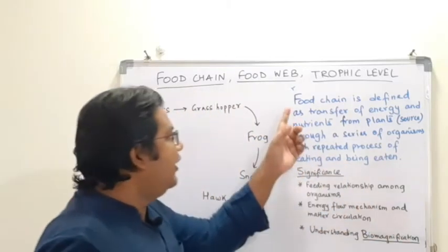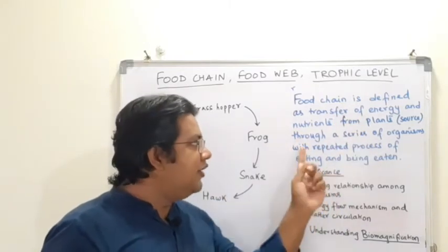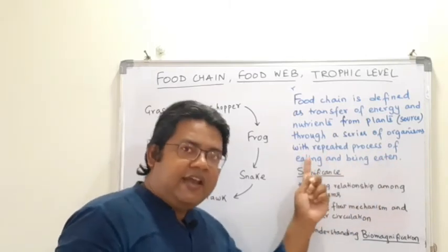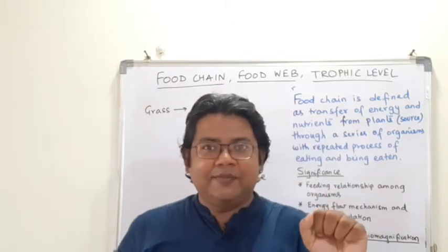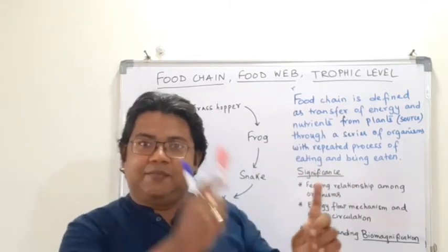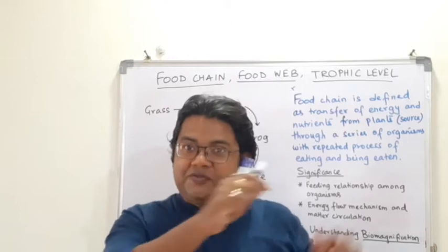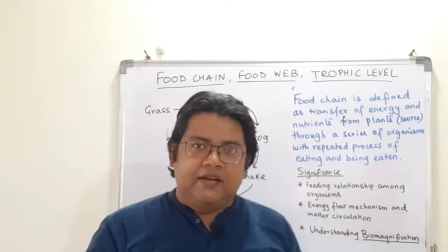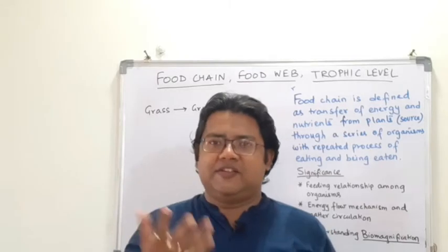A food chain is defined as the transfer of energy and nutrients from plants through a series of organisms with a repeated process of eating and being eaten. One organism eats another, or may itself be eaten by another organism. This process of transfer of food and nutrients starting from a plant through different organisms is called a food chain.